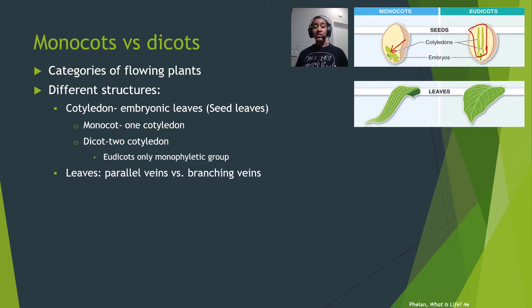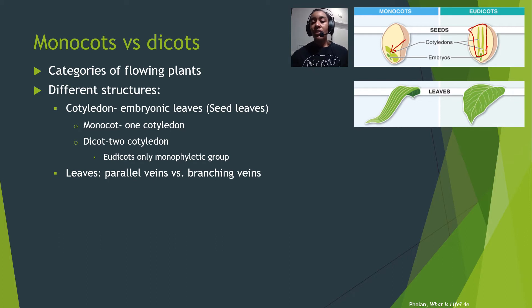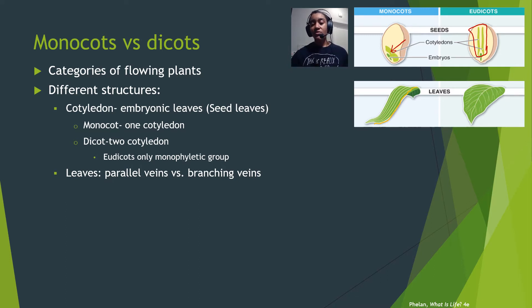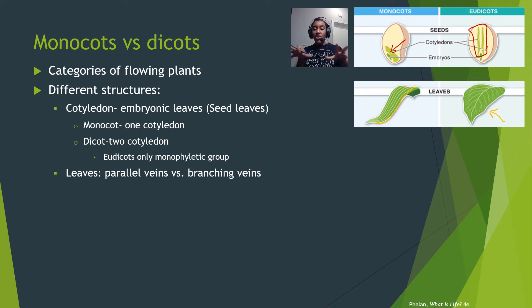The next major difference is in leaf structure. In monocots, we usually see parallel veins running straight from the stem down to the end of the leaf. In dicots, they generally have a branching structure — a central vein with the rest of the veins branching out from there, which is typically how we draw a leaf.